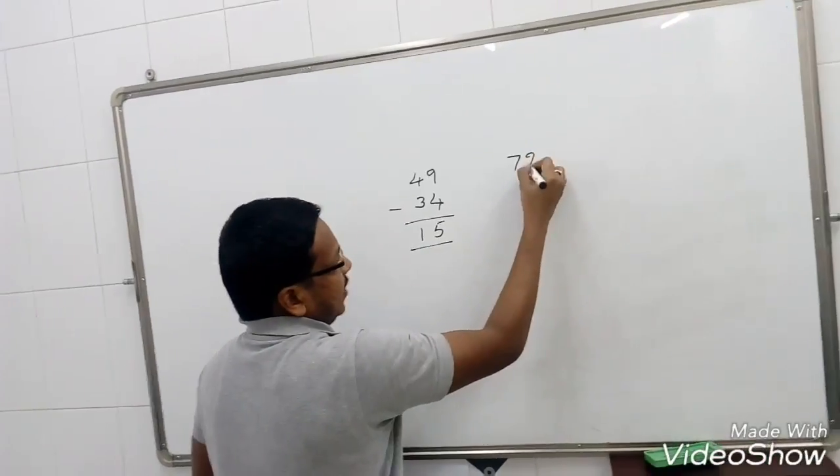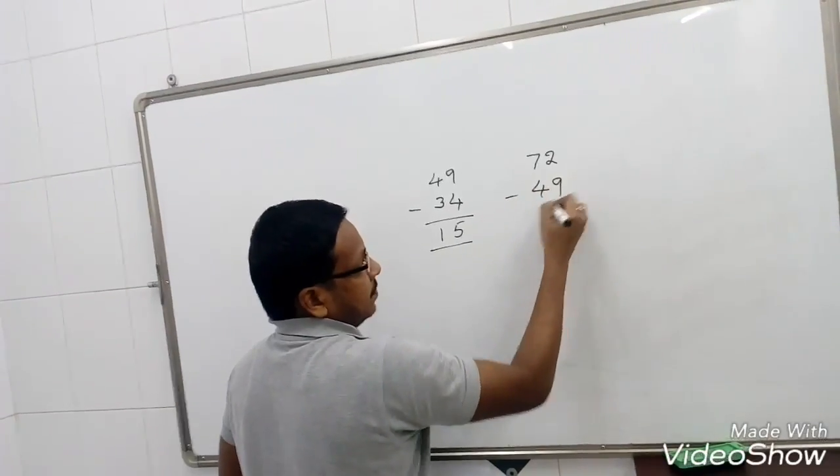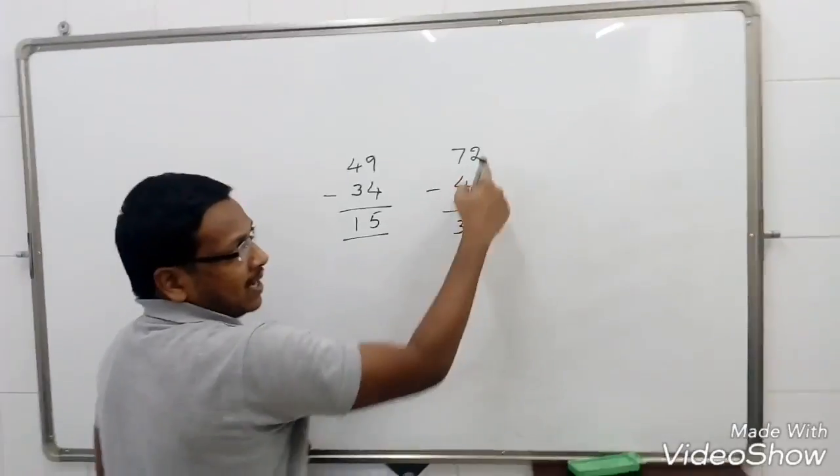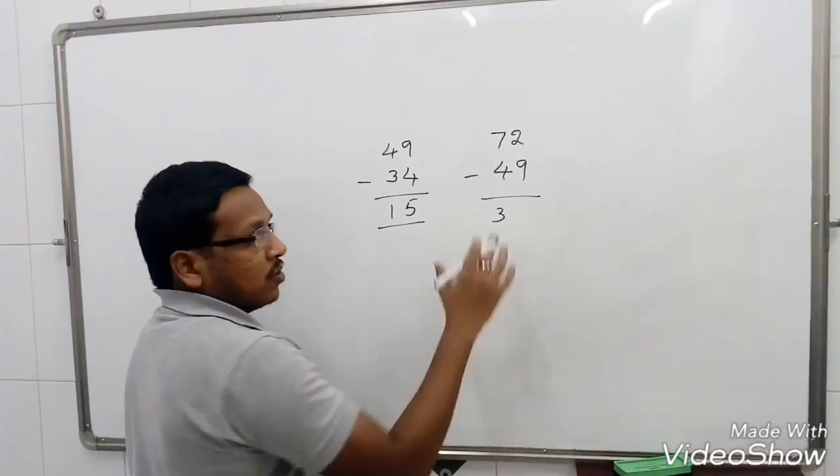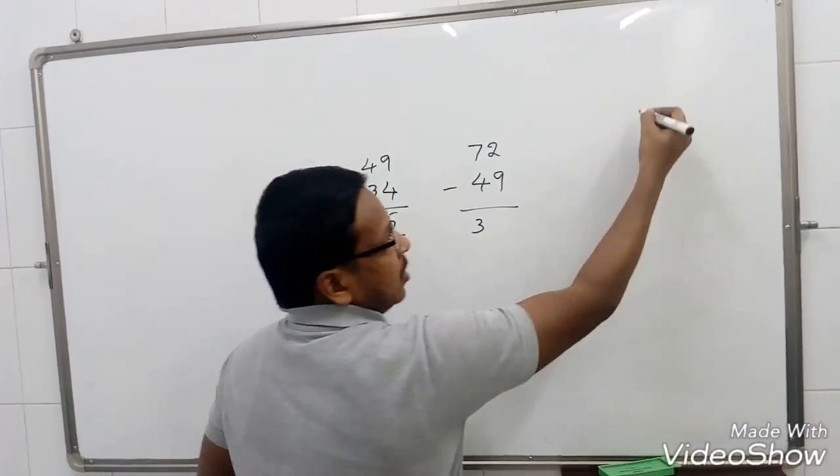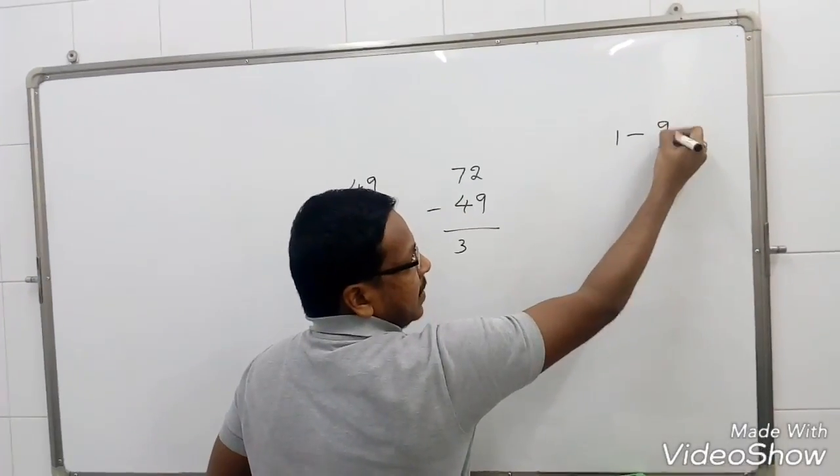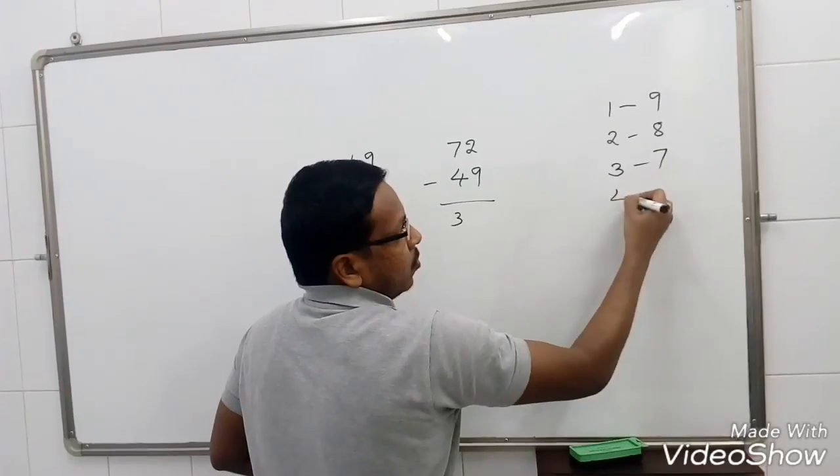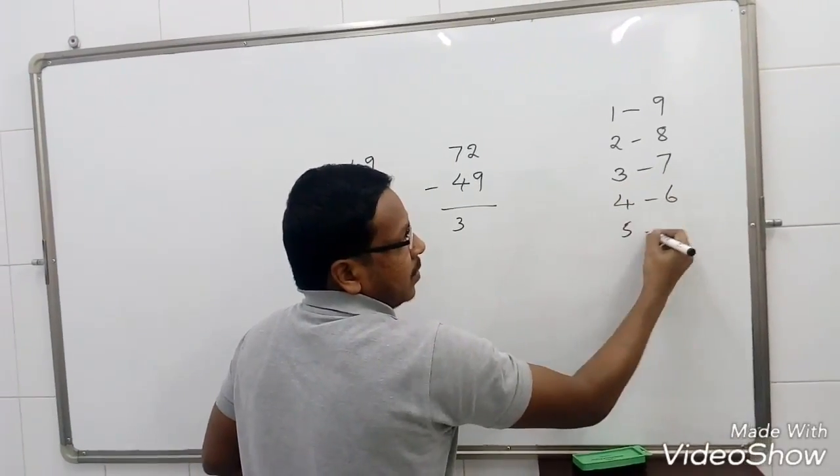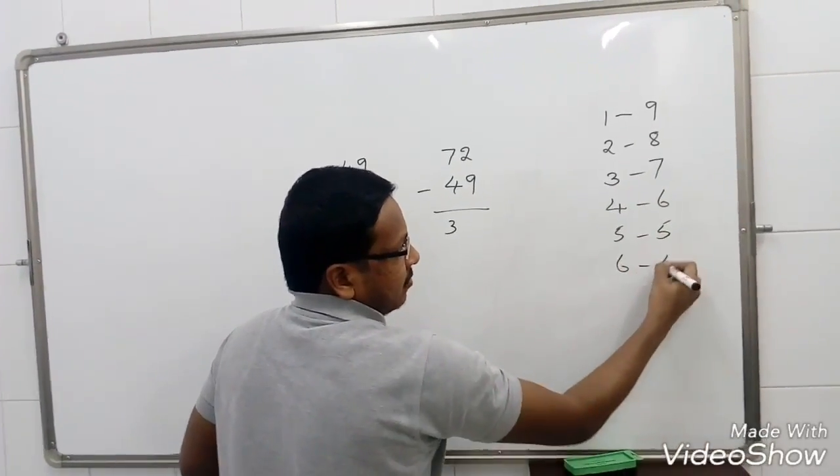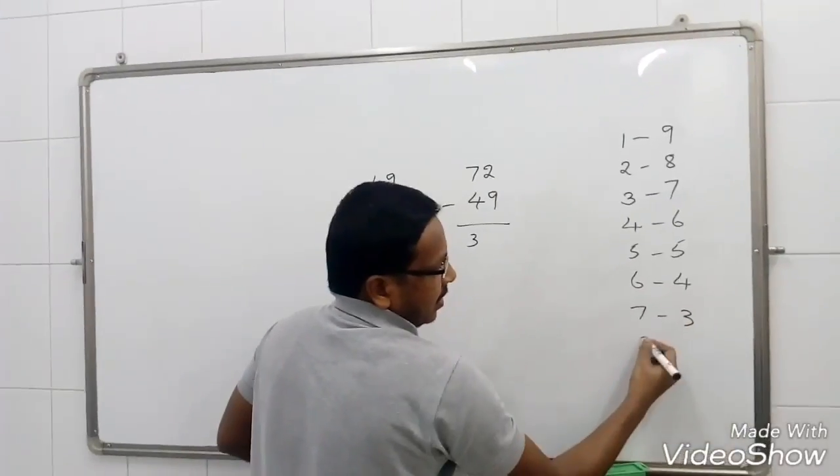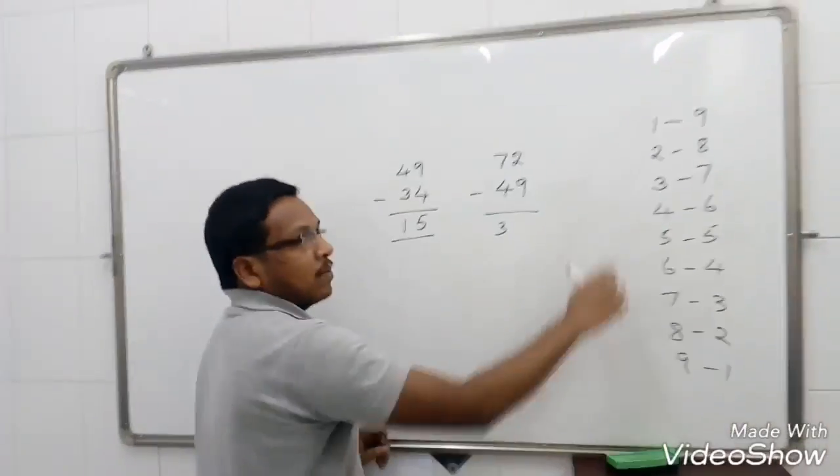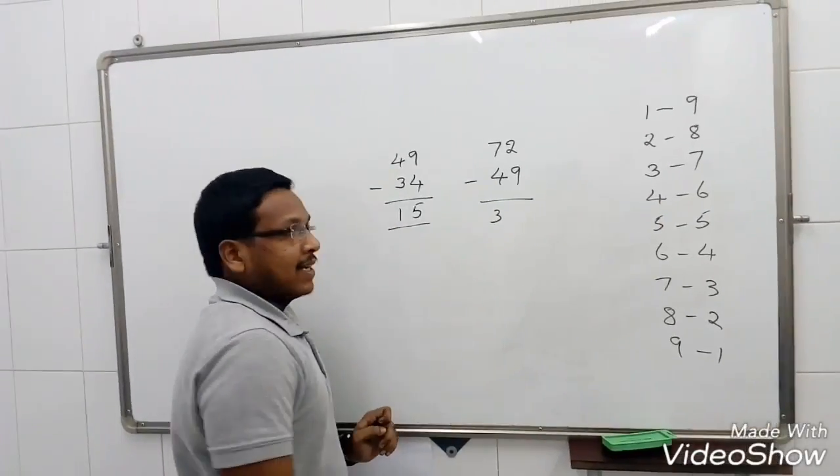But, when suppose a number is 72 minus 49. So, 7 minus 4 is 3. But, 2 minus 9 is not possible here. So, for this purpose, we should know the complement. So, 1 complement is nothing but 9. 2 complement is 8. 3 complement is 7. 4 complement is 6. 5 complement is 5. 6 complement is 4. 7 is 3. 8 is 2. And 9 is 1. So, which two numbers we add, we get the result as 10 is nothing but the complement.